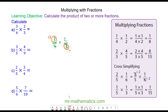We divide both by three, and in the other pair two is a common factor of two and four, so we divide both by two. Now we have three divided by three which is one, four divided by two which is two, multiplied by two divided by two which is one, and three divided by three which is one.